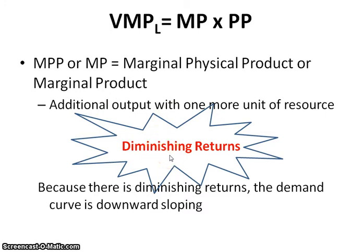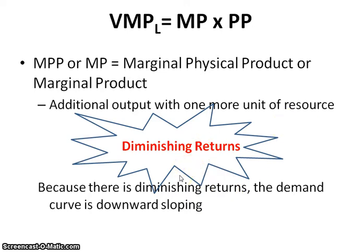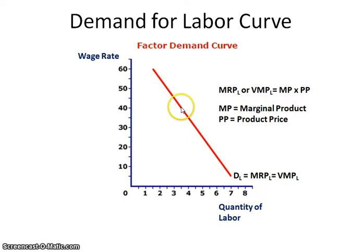Diminishing returns is where output increases at a decreasing rate. If you hold all other variable inputs constant and only look at what happens with labor, remember that marginal cost curve that's upward sloping — that Nike swoosh — it goes upward sloping because of diminishing returns. Your output increases at a decreasing rate, and therefore, that decreasing rate is the downward sloping part of the demand curve.